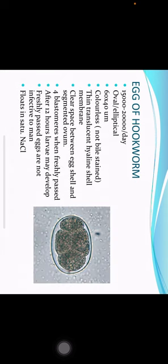Egg of hookworm: hookworm lays about 15,000 to 20,000 eggs per day. The eggs are oval or elliptical in shape, 60 by 40 micrometers in dimension. They are not bile stained. They have a thin translucent hyaline shell membrane. There is a clear space between the egg shell and the segmented ovum.